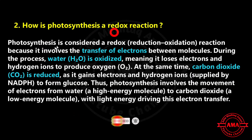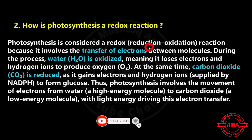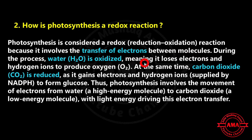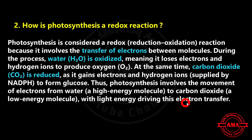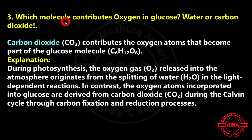This indicates that the wavelengths most strongly absorbed are also the most effective in promoting photosynthesis. Next: how is photosynthesis a redox reaction? Photosynthesis is considered a redox reaction — meaning reduction-oxidation reactions — because it involves the transfer of electrons between molecules. During the process, water is oxidized, meaning it loses electrons and hydrogen ions to produce oxygen.